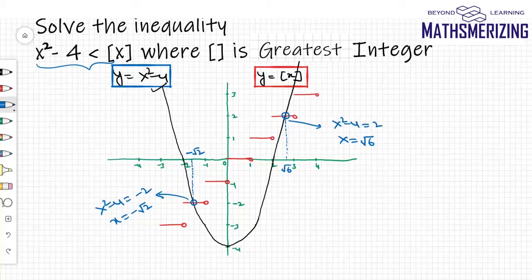The graph of x² - 4 lies below the graph of greatest integer function of x in this interval. So the answer to this inequality is x belongs to -√2 to √6.